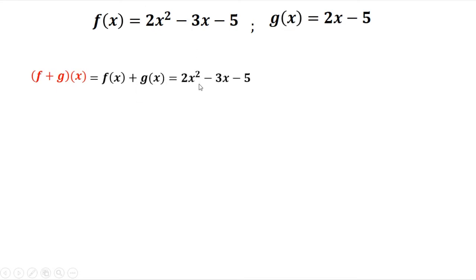From the given, f of x is 2x squared minus 3x minus 5, plus g of x, that's 2x minus 5. Then you just combine like terms.